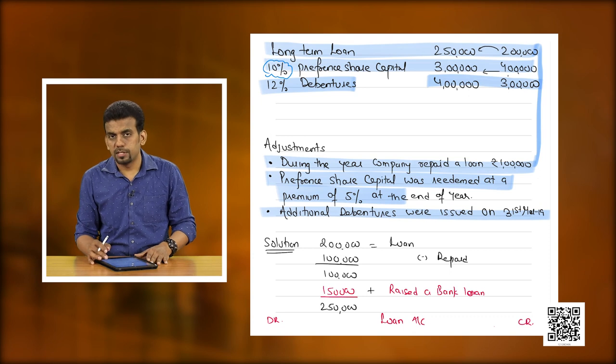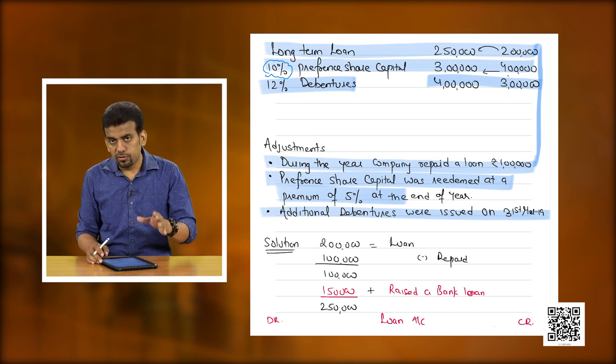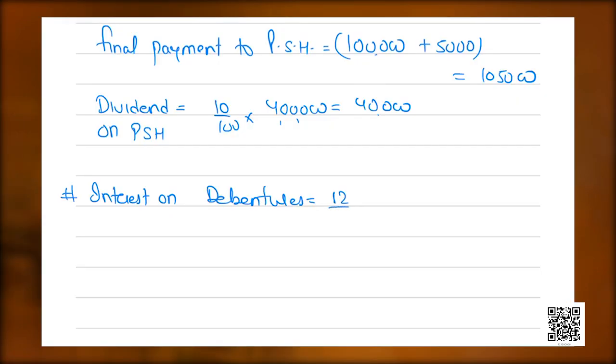For 12 percent debentures going from 3 lakh to 4 lakh: the additional debentures were issued on 31st March, meaning at year end. So interest is to be provided on 3 lakh only for the full year: 12% of 3 lakh = 36,000. We have done all the calculations, now we will place each item into the format.